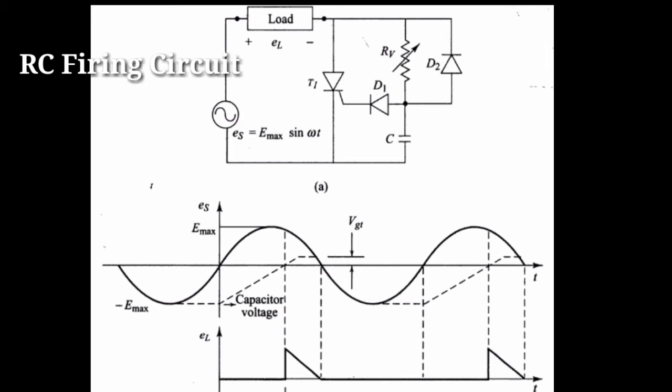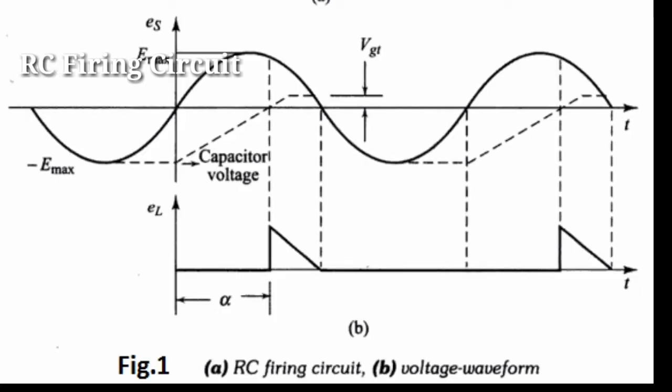To the peak supply voltage Emax. This capacitor voltage remains constant at negative Emax until supply voltage reaches zero value. Now the SCR anode voltage passes through 0 and becomes positive.